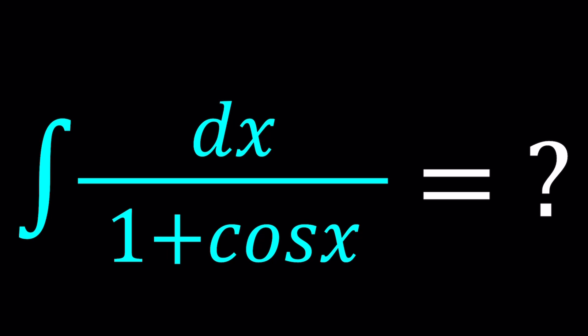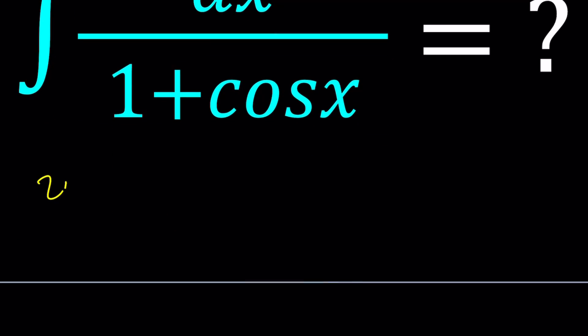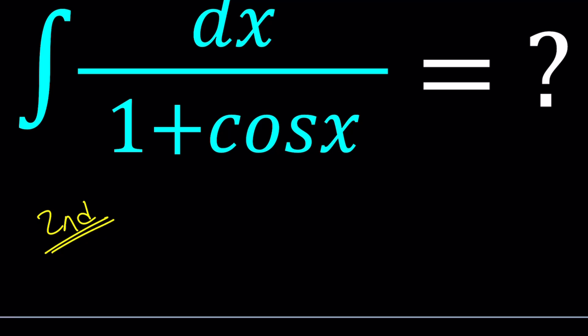I'll be presenting two methods and let's start with the second one because we haven't started with the second method for a long time. So for my second method, I'm going to use a very special way of substitution, which is called the Weierstrass substitution. Hopefully you are familiar with that, if not, then here we go.